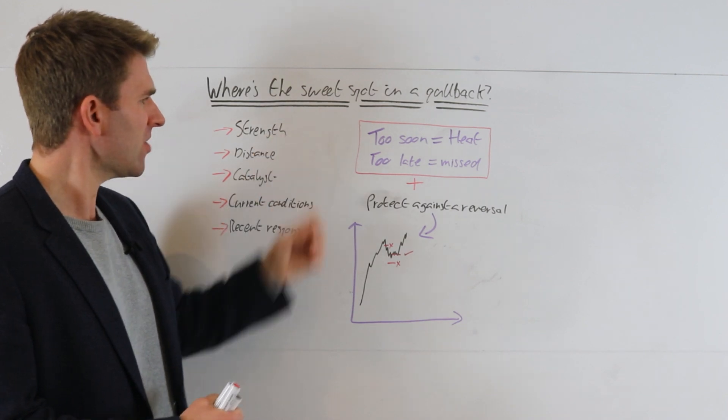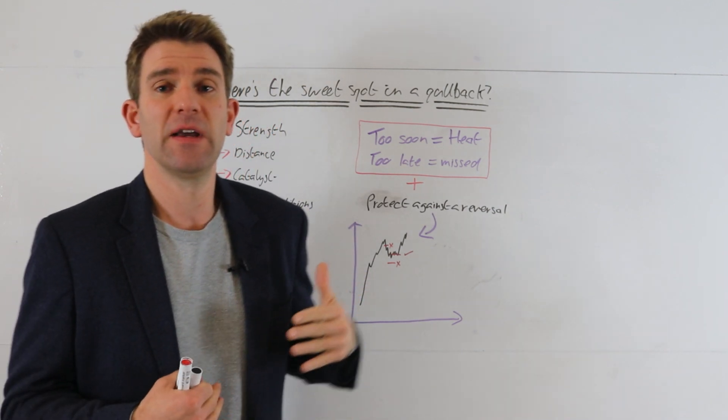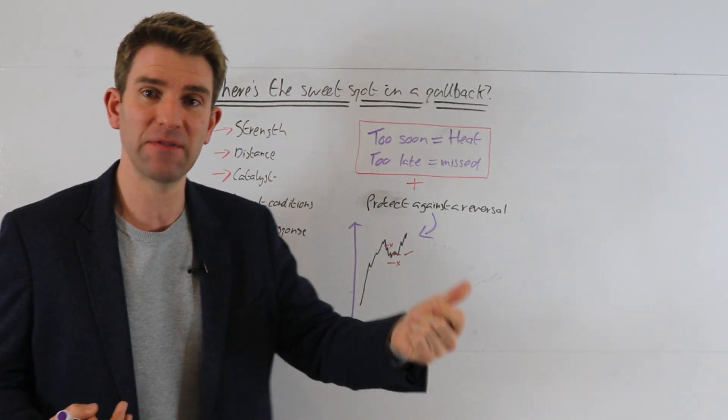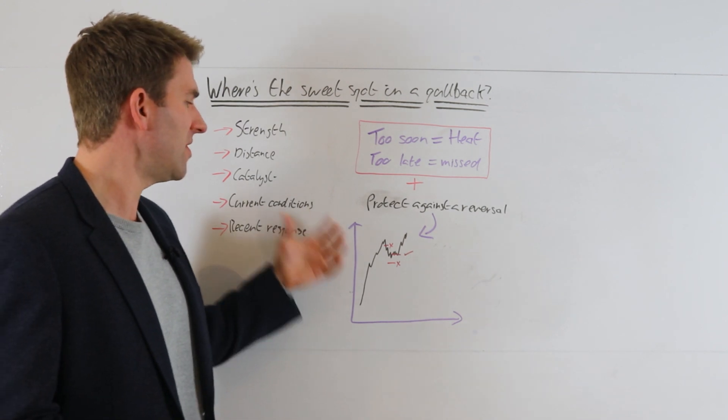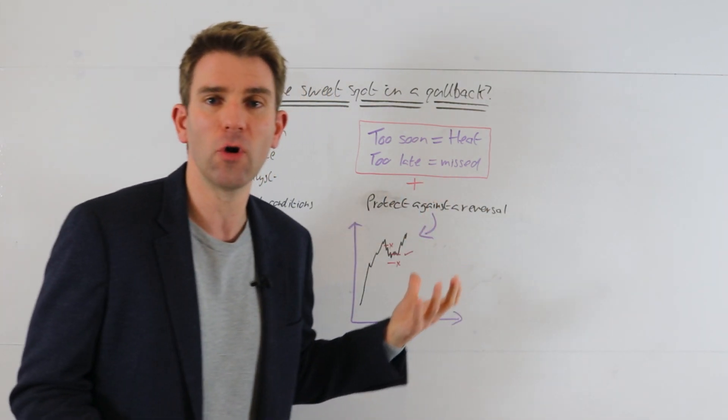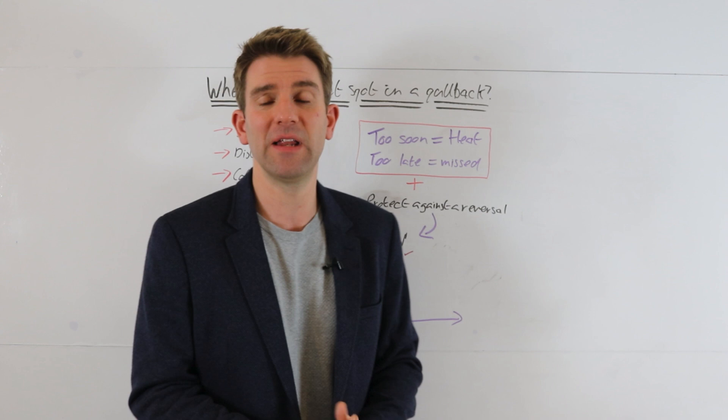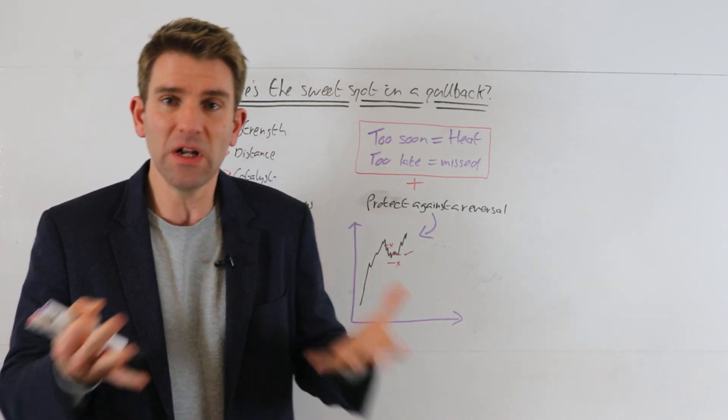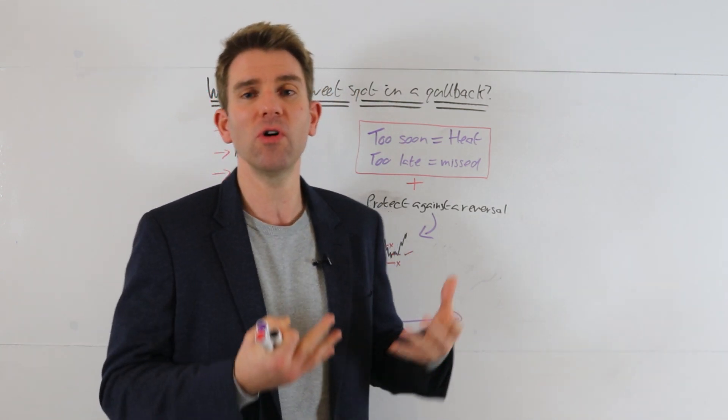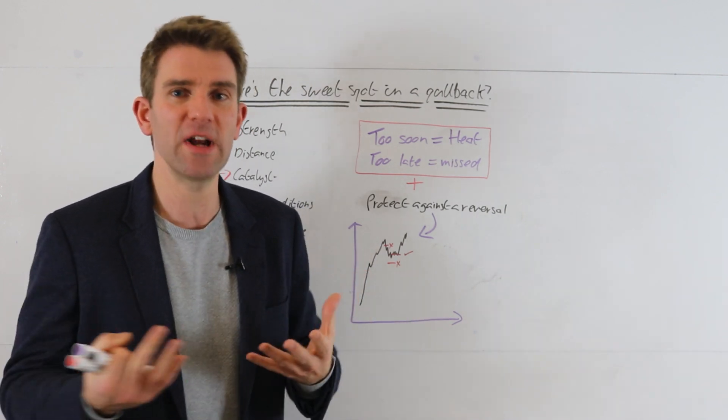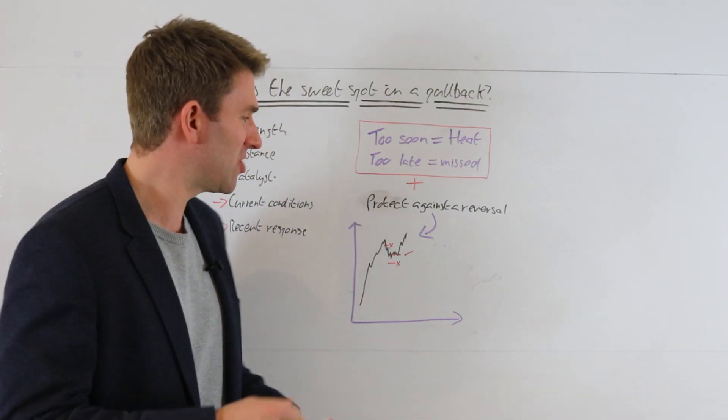Strength of the move - the angle, distance in terms of how many points this thing's moved. Is there a catalyst to add fuel to the fire? What are the current market conditions - bull market, bear market? Is stuff being shrugged off? And recent response to these kind of things before. In the current environment, maybe most of the time these moves get undone within the next five minutes, or most of the time these things hold. You've got to gauge it depending on what market you're trading.